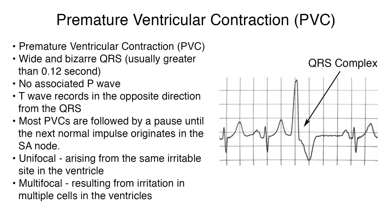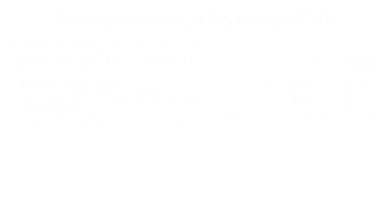PVCs have a characteristic wide and bizarre QRS, usually greater than 0.12 seconds, on the ECG. There is no associated P wave, and the T wave records in the opposite direction from the QRS. Most PVCs are followed by a pause until the next normal impulse originates in the SA node. PVCs can be unifocal, arising from the same irritable site in the ventricle, or multifocal, resulting from irritation in multiple cells in the ventricles.